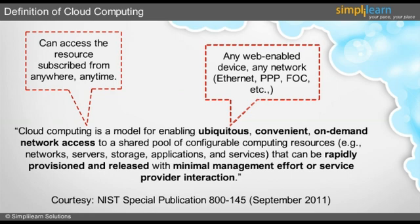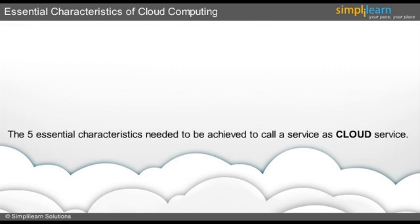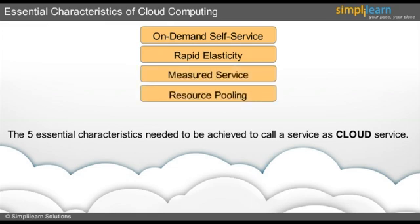In the next slide, we will discuss the essential characteristics of cloud computing. NIST states that there are five essential characteristics which are achieved by the service providers so that they can call their service a cloud service. The five essential characteristics are: on-demand self-service, rapid elasticity, measured service, resource pooling, and broad network access.